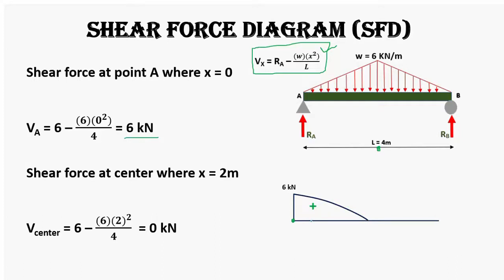This represents the positive half of the shear force diagram. The other half has the same loading pattern but in the opposite direction, so it mirrors the first half in the downward direction. This completes our total shear force diagram.